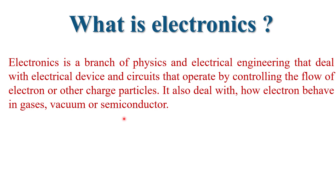A device which controls the flow of electrons is called an electronic device. These electronic devices are the main building blocks of any electronic circuit. The motion of electrons through a conductor gives us electric current. This electric current is produced with the help of batteries or generators.